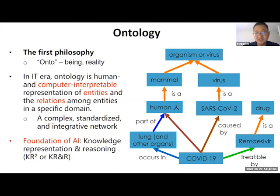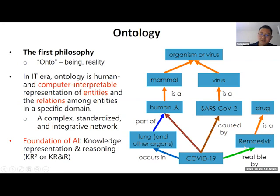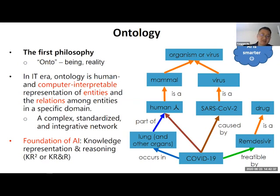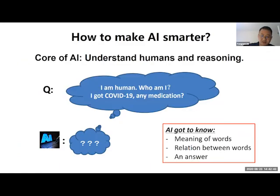Let's come back to the robot question. COVID-19 is induced by the virus SARS-CoV-2 and occurs in humans. The human is a mammal, the virus infects organs like the lung, and treatment can include remdesivir, which is a drug. If the computer knows this structure, it becomes smarter and can more appropriately answer the questions we had earlier.